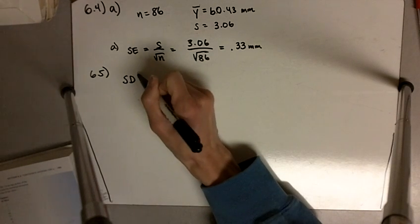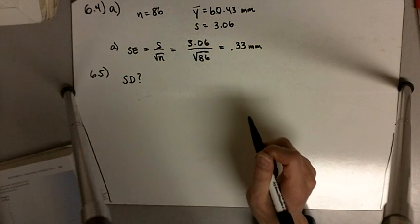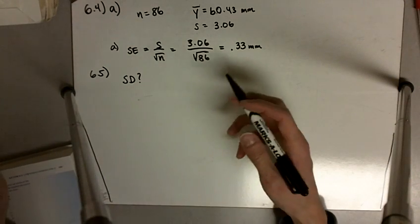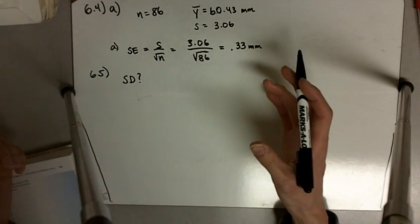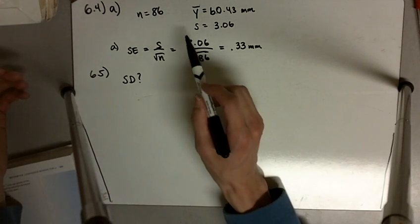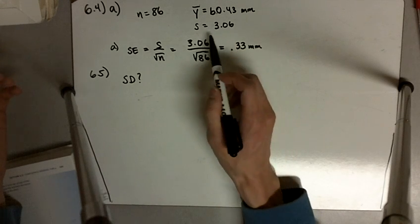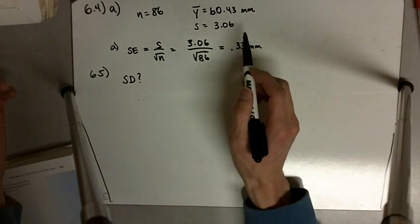So what happens to the standard deviation? The standard deviation is how much the data varies within a sample. So in our case, we expect the sample, if we had 86 mice in the sample and that had a standard deviation of 3, we would also expect the standard deviation of the 500 mice to also be about 3.